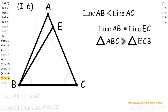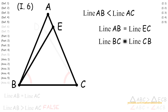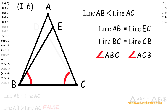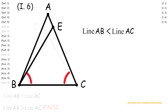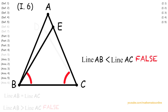Looking at triangle ECB and triangle ABC, we can see that by Axiom 5, triangle ABC is greater than triangle ECB. We can also see that both triangles share the same side — specifically, line BC is congruent to line CB. Since both triangles share a corresponding side, angle, and side, then by Axiom 4, triangle ABC is congruent to triangle ECB. But we showed that triangle ABC is greater than triangle ECB. This is a contradiction, therefore the statement that line AB is less than line AC is false.